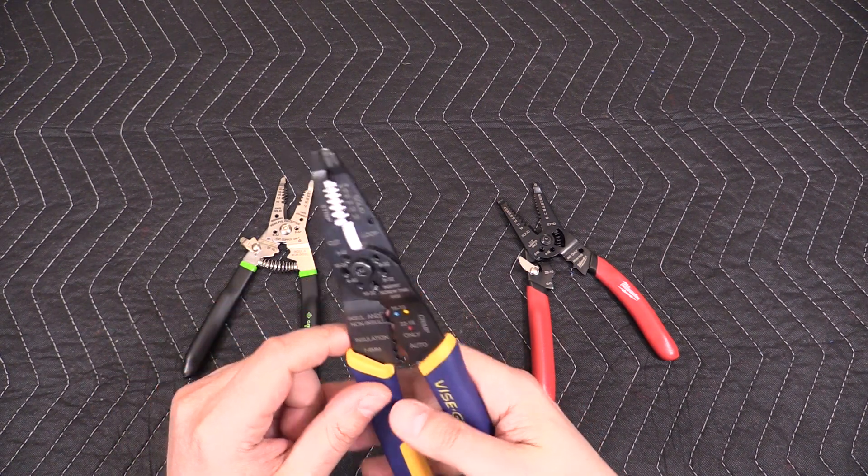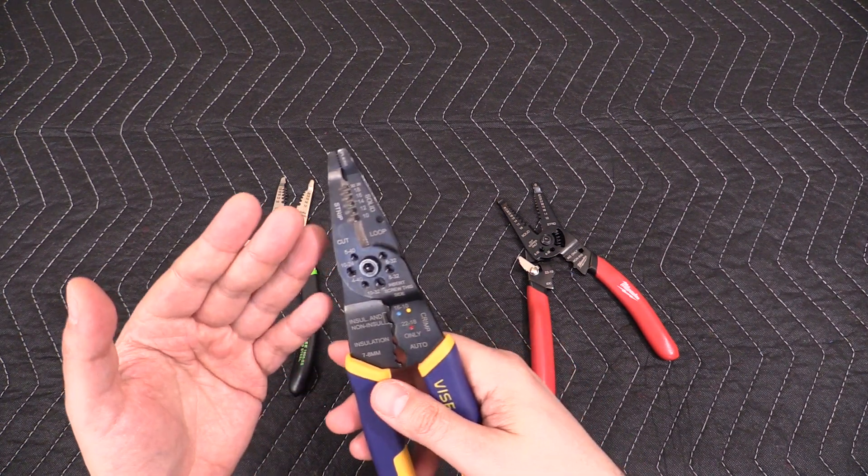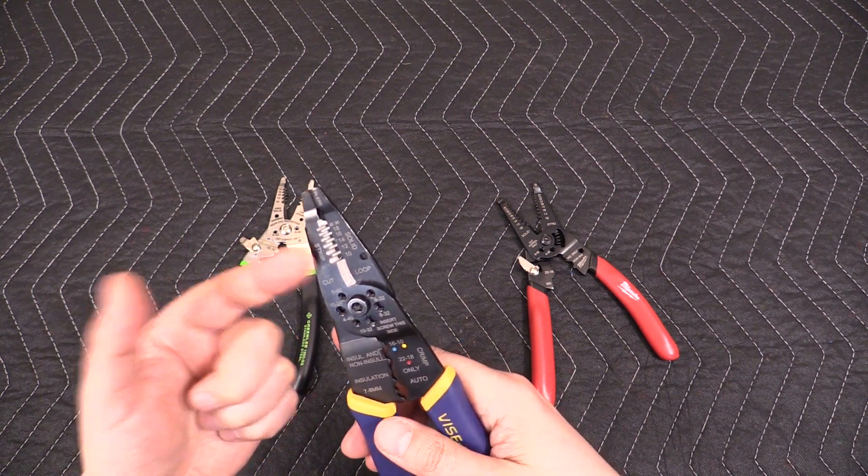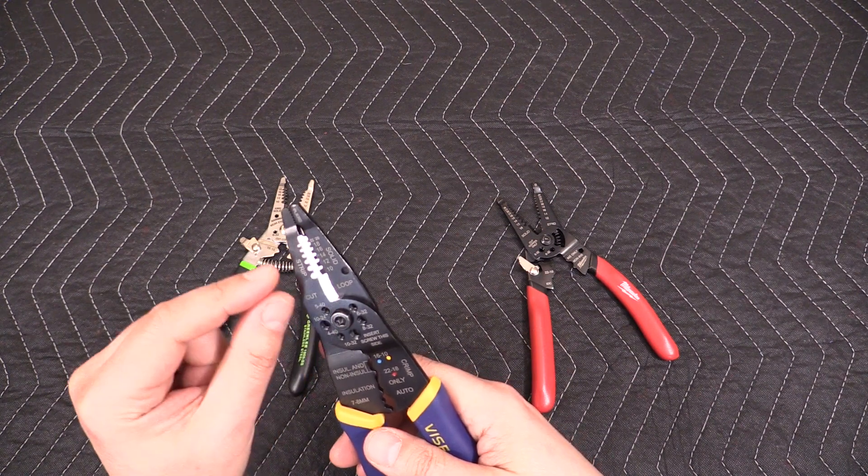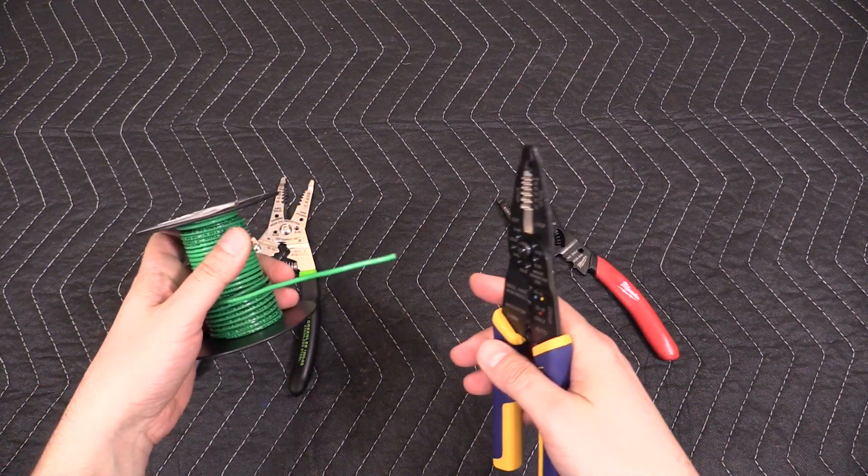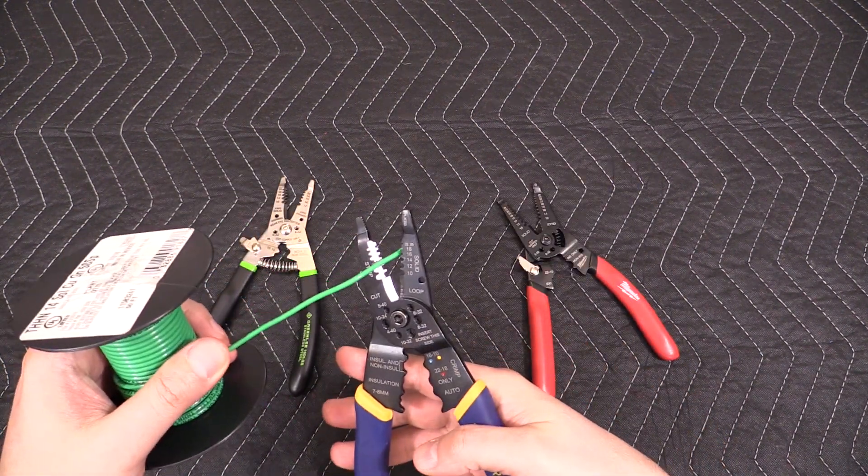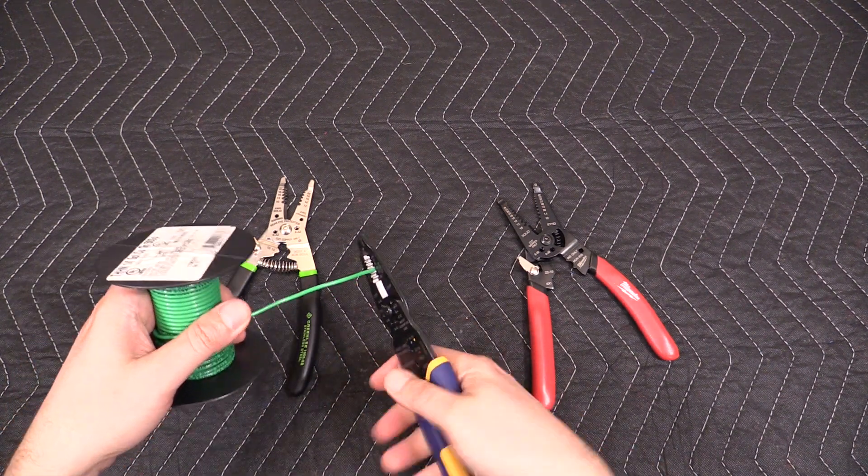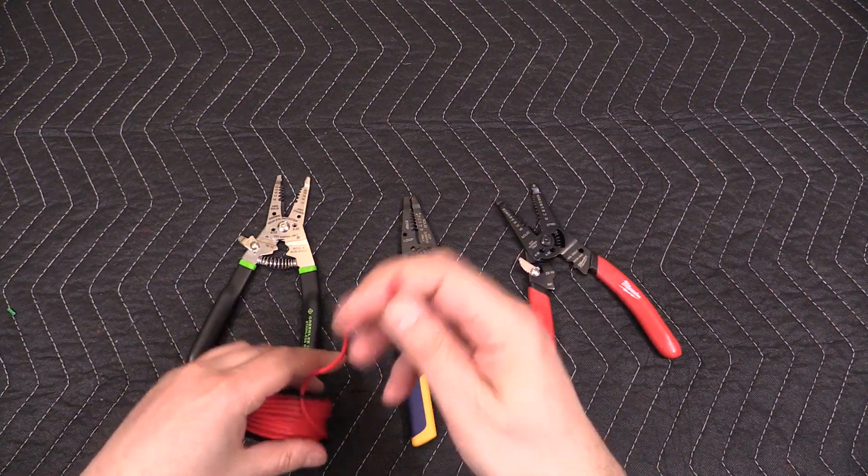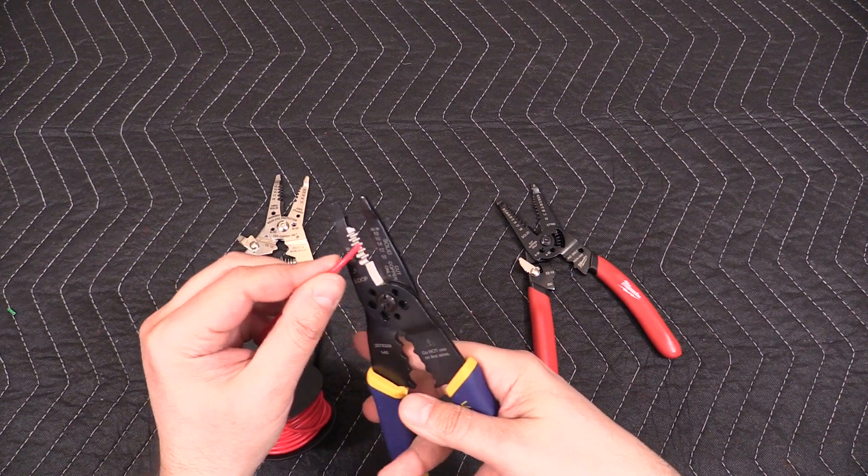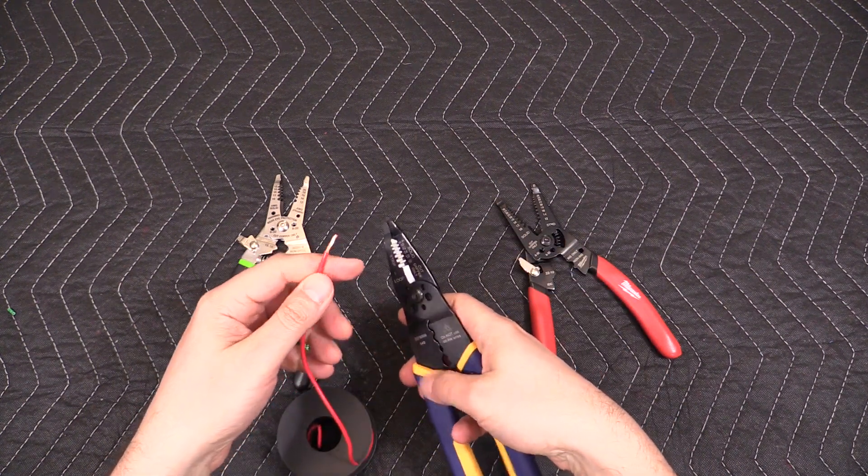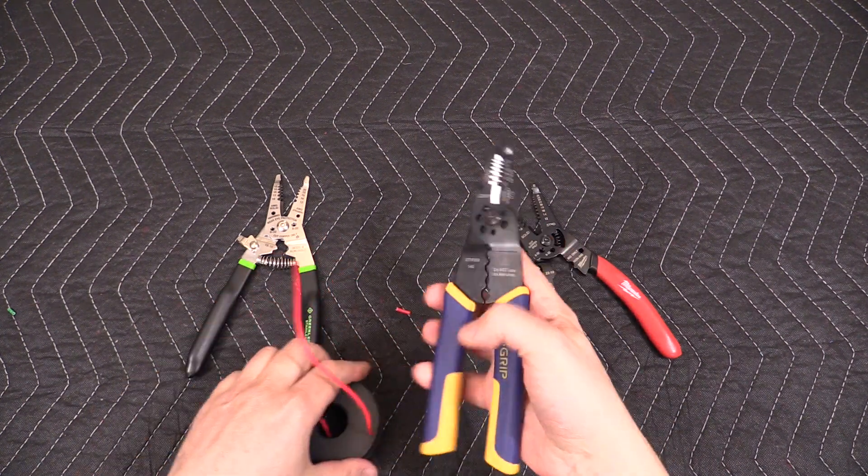The only downside of this stripper is really that the markings here are only for solid wire, so if you're doing stranded wire you're gonna have to mentally make an adjustment to use one size up. For example, here's some solid 14 gauge wire, I'm gonna go to 14 gauge - that works. And here's some 16 gauge stranded wire, so for this I have to use the 14 gauge solid notch and that lets me strip 16 gauge stranded. Other than that I have no complaints about it.